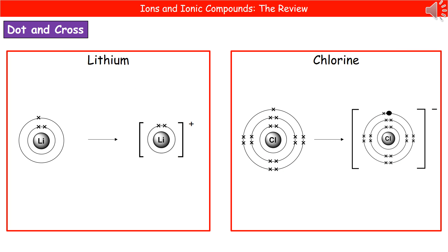So one of the things you need to be able to do then is to draw what's called dot and cross diagrams. Now, we're going to start off just looking very simply at how we would draw the actual diagram for an ion. So we've got lithium and chlorine as two examples here. If we look at lithium first on the left hand side, lithium has an atomic number of three. So it's got three electrons. So two go in the first shell closest to the nucleus and one in the next shell.